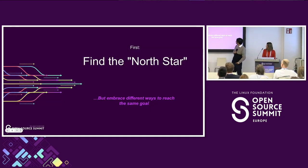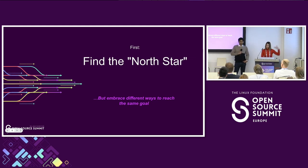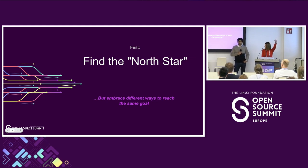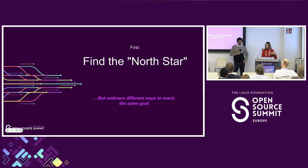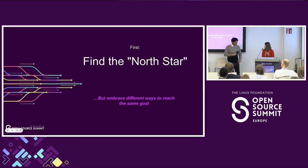First off, you need to find the North Star. At the end of the day, every open source community is working towards some sort of objective. Within those objectives there are smaller objectives, but you have the one North Star. What are you trying to accomplish as a community, and what does that look like? Once you're there, you can plan out different ways to get there. There's often a million different ways to reach the same goal, so it's important to not lose focus on what you're trying to do versus how you get there.